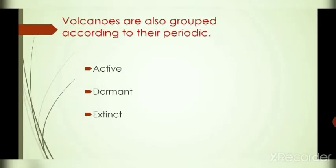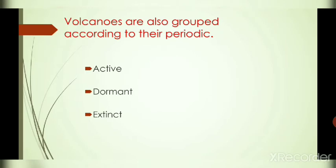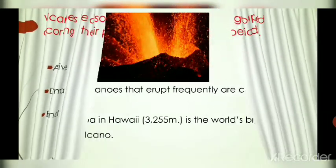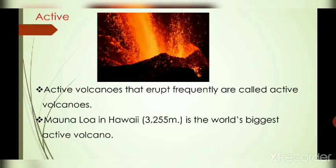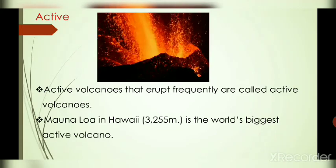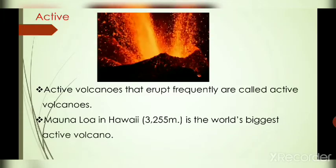Volcanoes are also grouped according to periodicity — that is, based on time. Volcanoes are divided into active, dormant, and extinct volcanoes. Active volcanoes erupt frequently, and they are mostly located in the Pacific Ring of Fire Belt along the Pacific coast. There are 600 active volcanoes in the world. Examples are Mount Stromboli in the Mediterranean Sea, St. Helens in the USA, and Pinatubo in the Philippines.